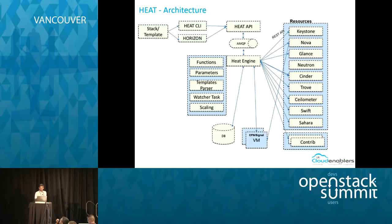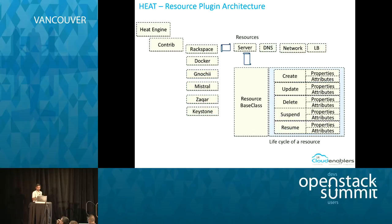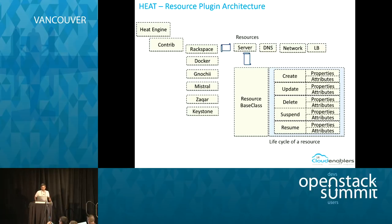HEAT has a mechanism to talk to the destination VM through CF signal, and maintains all data in a database. The resource plugin has two sections: native resource plugins and contributor resource plugins. Anyone can extend and put plugins in the contributor section. Examples include Rackspace, Docker, Gnocchi (a time aggregation database as a service, part of Ceilometer), Mistral workflow, and Keystone plugins.